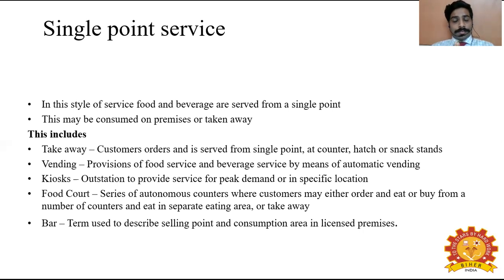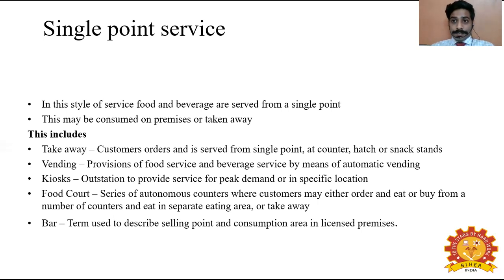Vending machines, as seen in airports and abroad, dispense food and drink when you insert payment and press a button — mostly sandwiches and soft drinks in Indian airports, but also chips and other items in European countries. A kiosk is an outstation set up to provide service for peak demand at a specific location — a cloud kitchen is an example, as it only has a kitchen with no dining area and provides food purely as takeaway. A food court, available in malls, airports, bus stations, and railway stations, has different restaurant varieties — fast food, fine dining, biryani shops, juice shops — all operating as single point service.